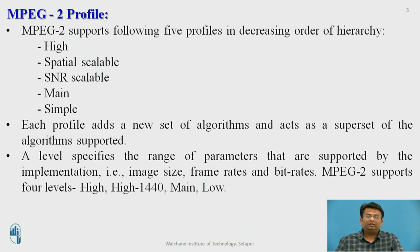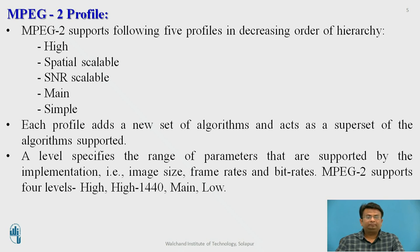The five profiles in decreasing order are: high profile, spatial scalable profile, signal-to-noise ratio (SNR) scalable profile, main profile, and simple profile. Each profile adds new sets of algorithms and acts as a superset of the algorithms supported. A level specifies a range of parameters supported by the implementation, such as image size, frame rate, and bit rate.